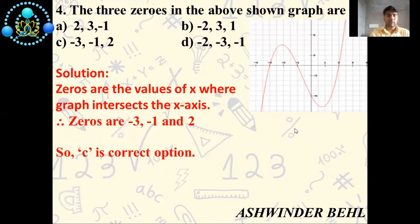Now we will discuss the solution. Zeros are the values of x-axis where graph intersects the x-axis. Therefore the zeros are -3, -1, and 2. So correct answer is C.